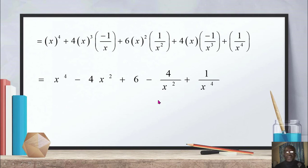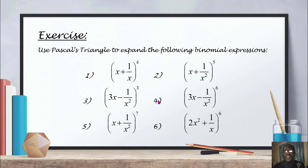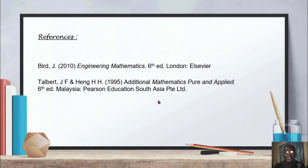That's example number 2 — expanding binomial expressions using Pascal's Triangle. Please try out the following examples. First, construct Pascal's Triangle, then pick the coefficients for the terms of the binomial expansion. For further reference, please refer to John Bird's Engineering Mathematics, 6th edition, or the commonly known Pure and Applied Mathematics by Talbert, 6th edition. Thank you for listening.